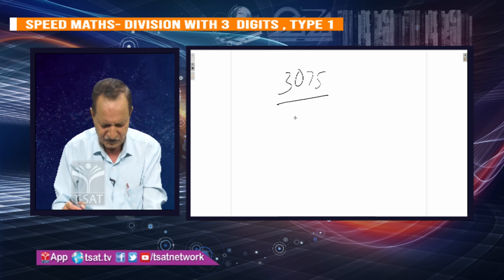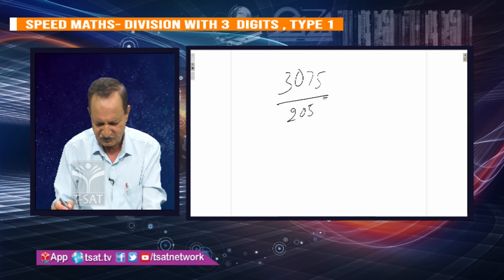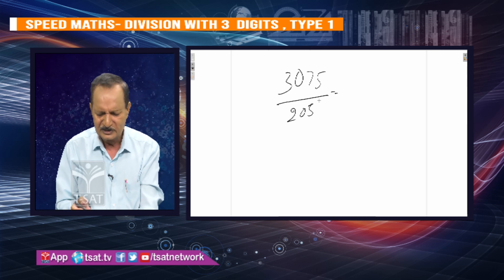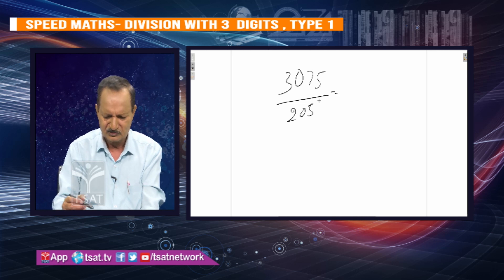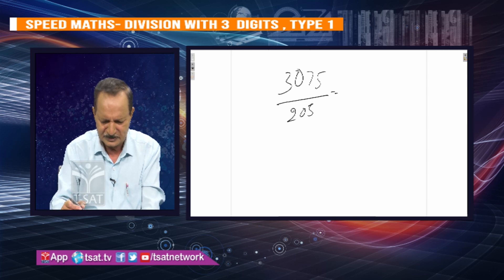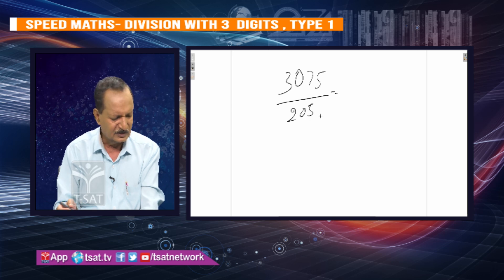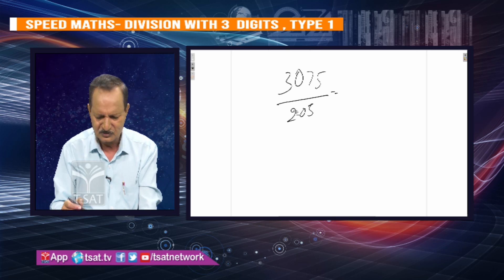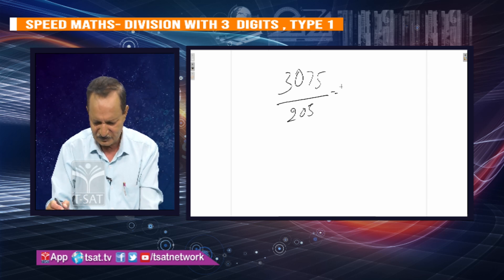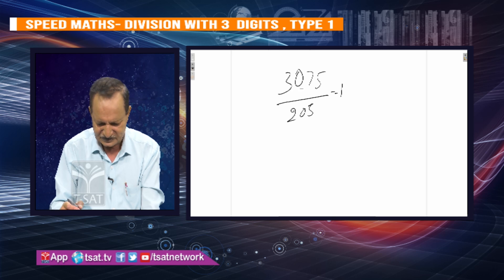3075 by 205. Here we have the 20-table. The 20-table: 5, 10 — easy to do. 3, 20, 20, 20. I will do it in the next session.